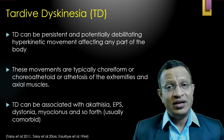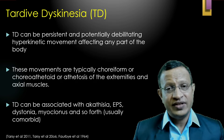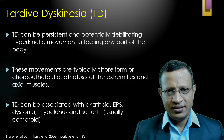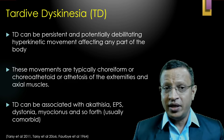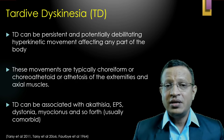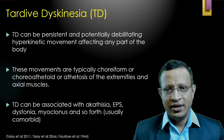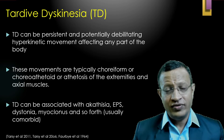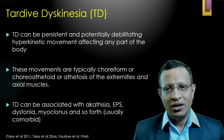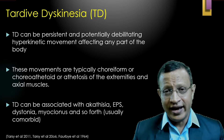These movements are typically choriform, choreoathetoid, or athetosis of the extremities and axial muscles. TD can be associated with akathisia, extrapyramidal symptoms, dystonia, myoclonus, pain disorder and so forth. Hence, this AIMS scale for the assessment and screening of abnormal involuntary movement is very essential when you are prescribing antipsychotics, especially in the psychiatric field.